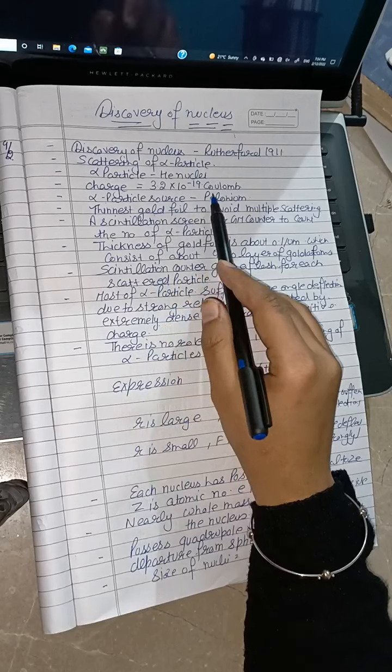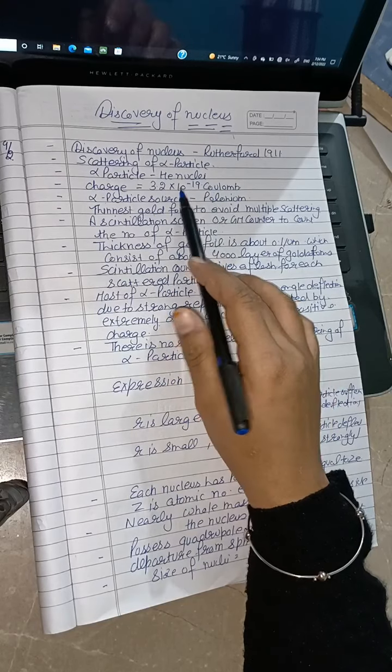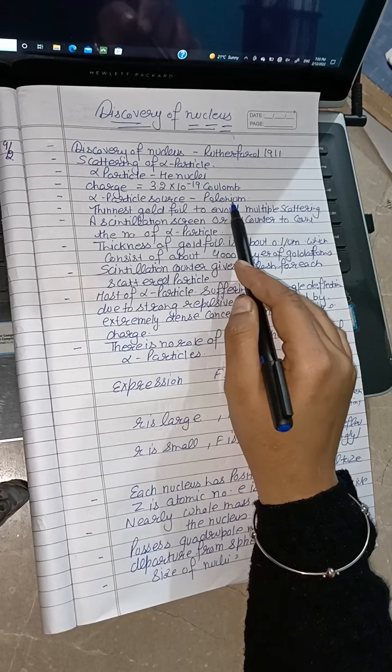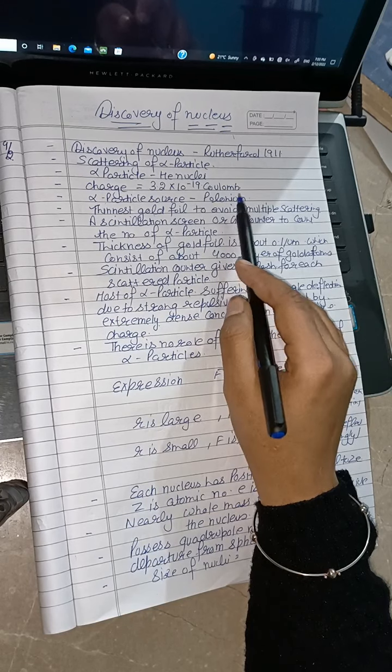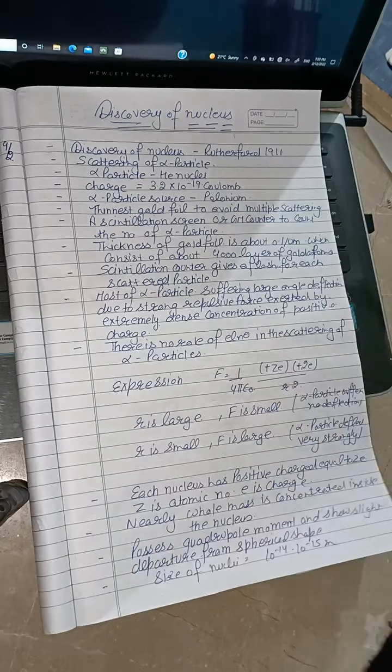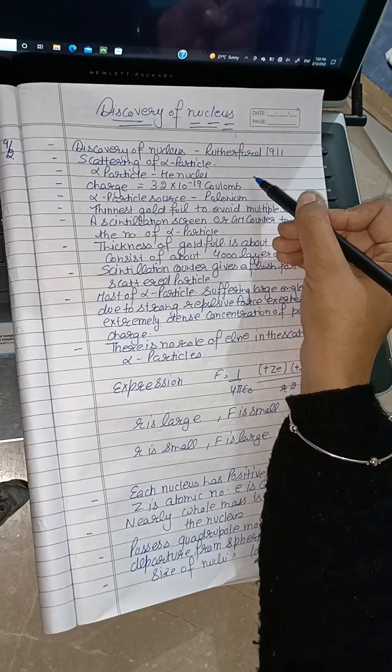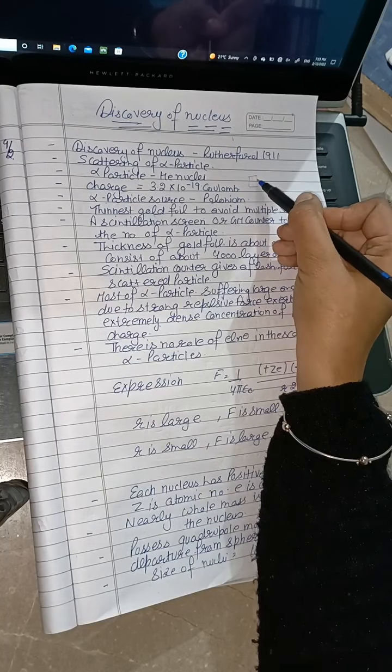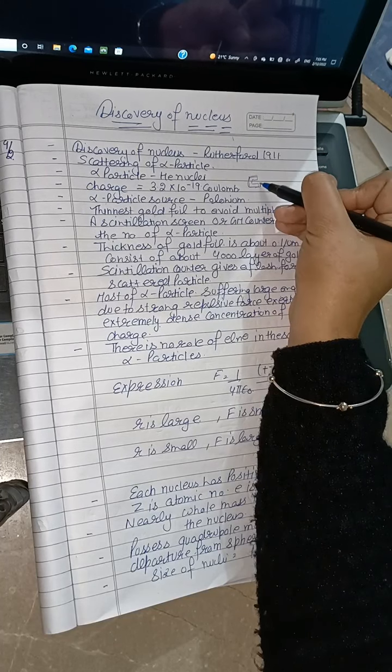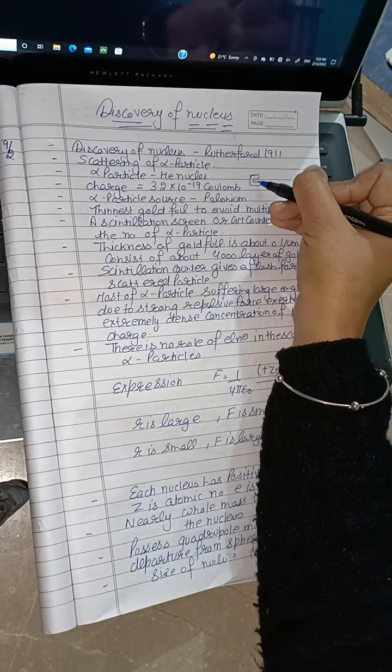Basically, the alpha particles came from the radioactive source and struck the gold foil. When they struck the gold foil, a GM counter was used for detection of alpha particles as well as confirmation of the radioactive element location.